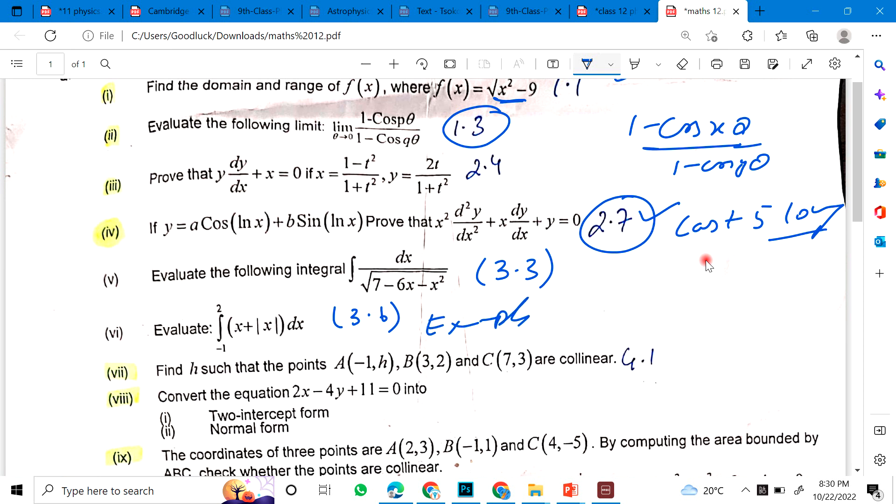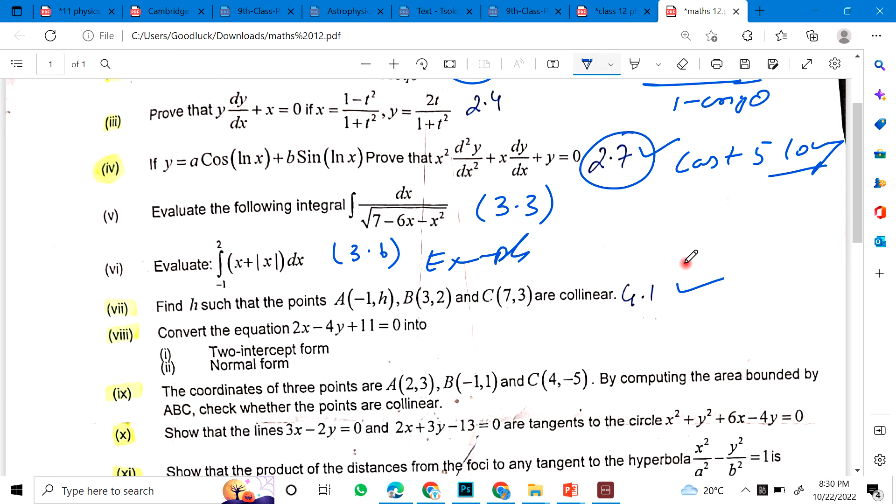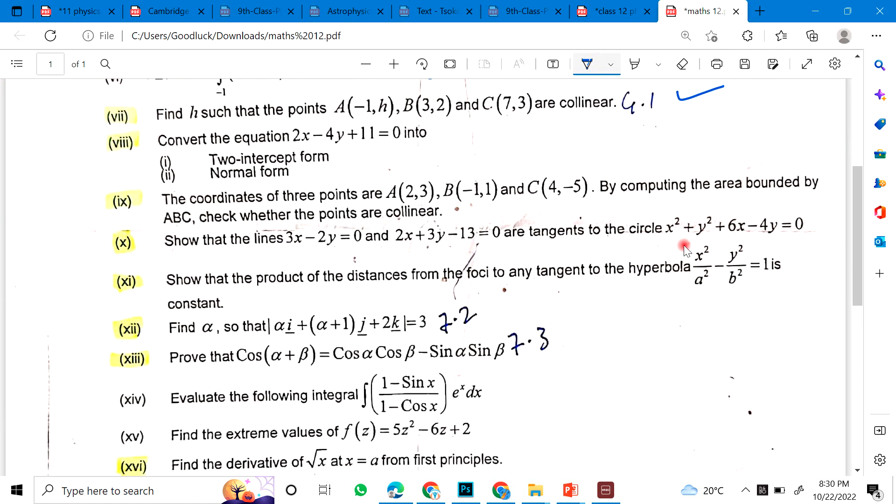In the same time, you have to see that the following points are collinear. 4.1's next time, convert the following equation into 2-intercept form and normal form. And then the coordinates of 3 points A, B, C are given. By computing area bounded by A, B, C, check whether the points are collinear or not. You have to take the area and check whether they are collinear or not.